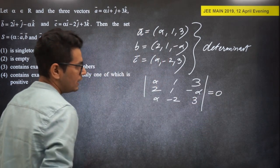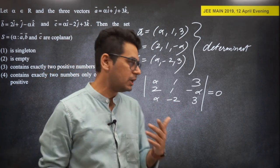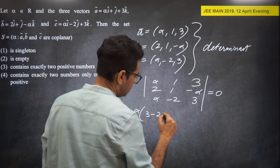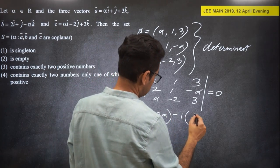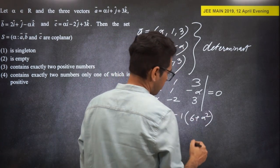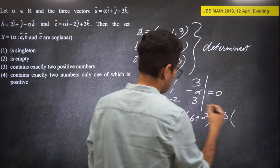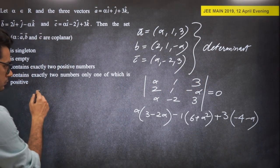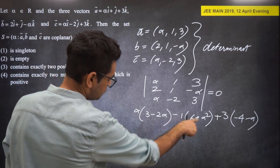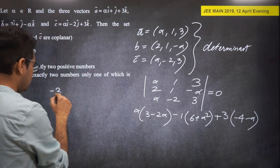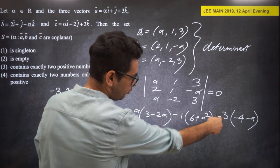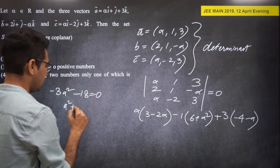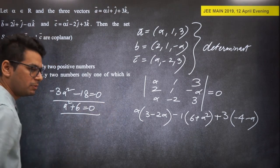Expanding the determinant along the first row: expanding carefully gives alpha*(1 + 2*alpha) - 1*(2 - alpha²) + 3*(-4 - alpha). After simplification: alpha² - 3*alpha² - alpha + 3*alpha - 18 = ... leading to alpha² + 6 = 0... wait, let's redo: the result is alpha² + 6 = 0. Since alpha² ≥ 0 always, alpha² + 6 ≥ 6 > 0, so no real solution exists.